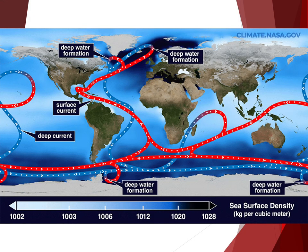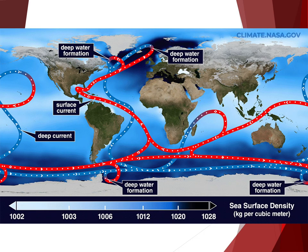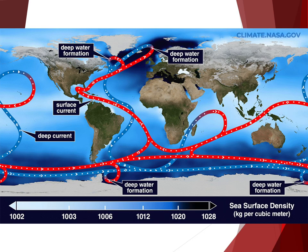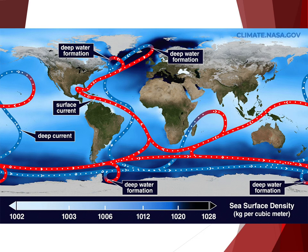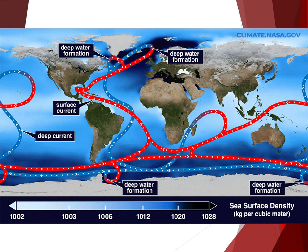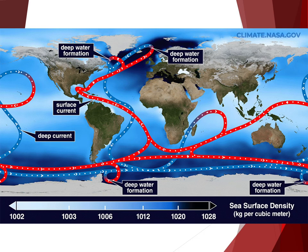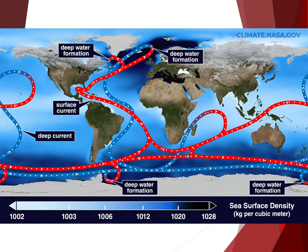Convection is also important in the world's ocean currents. Cold, dense water near Earth's poles sinks and moves along the bottom of the seafloor. Water warmed near the equator, and pushed by wind and Earth's rotation, moves along the surface toward the poles. Warm water passes near landmasses, warming them and significantly affecting their climate.